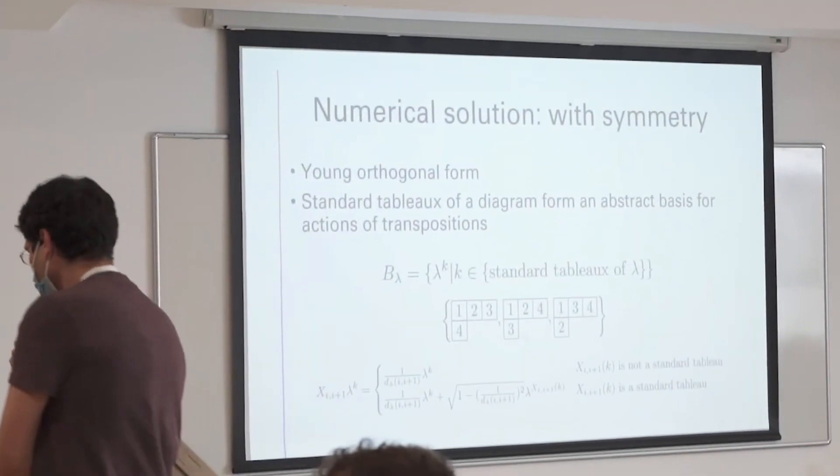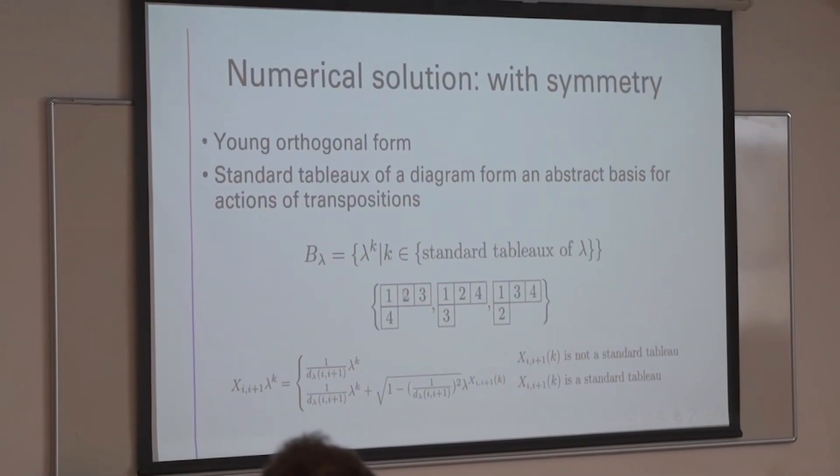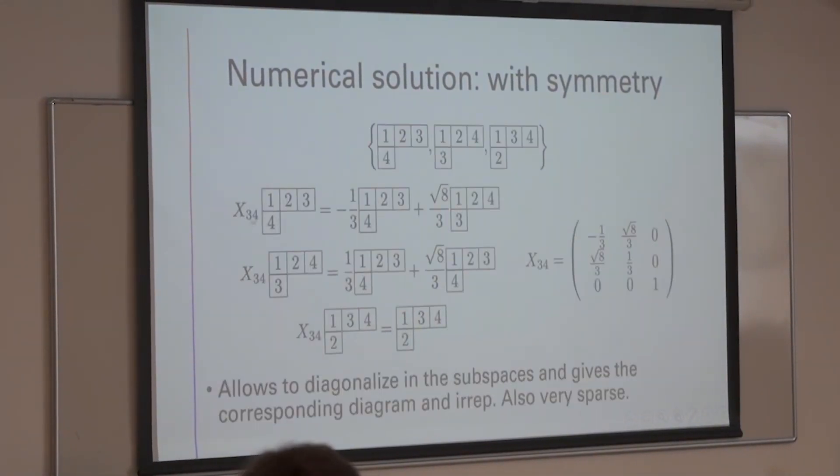Is there a physical realization for the model? I don't think so. — Can you explain the matrix X₃₄ again — why was it a sparse matrix and how do you compute it? I used an algorithm. This is the basis, and the algorithm tells you how the operator acts on this basis. Here X₃₄ acts on this vector and you get these resulting vectors.